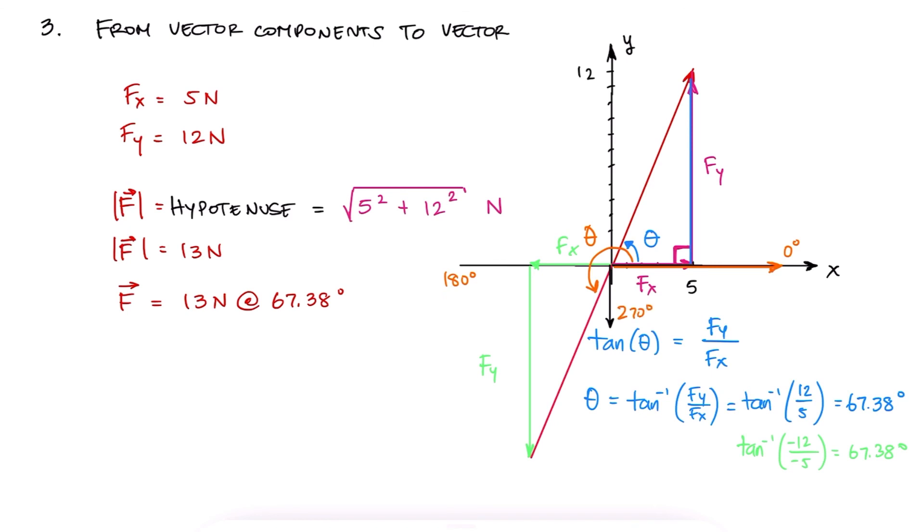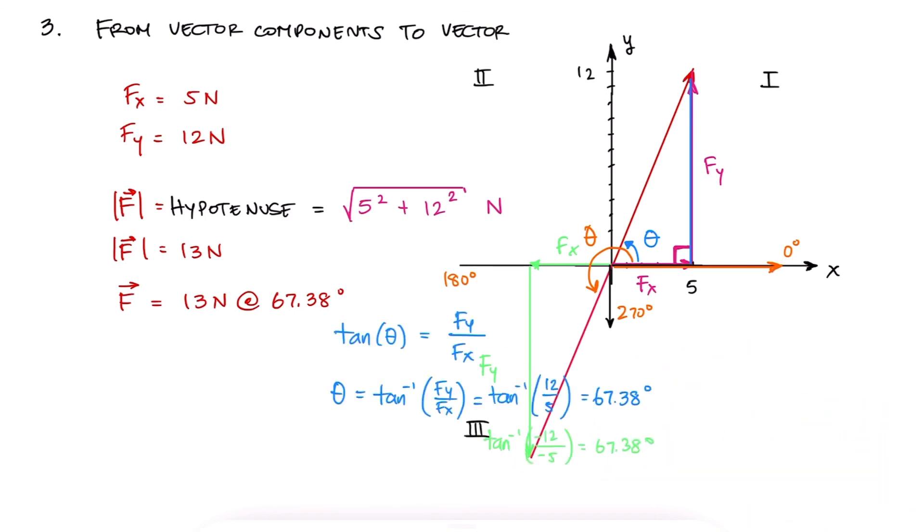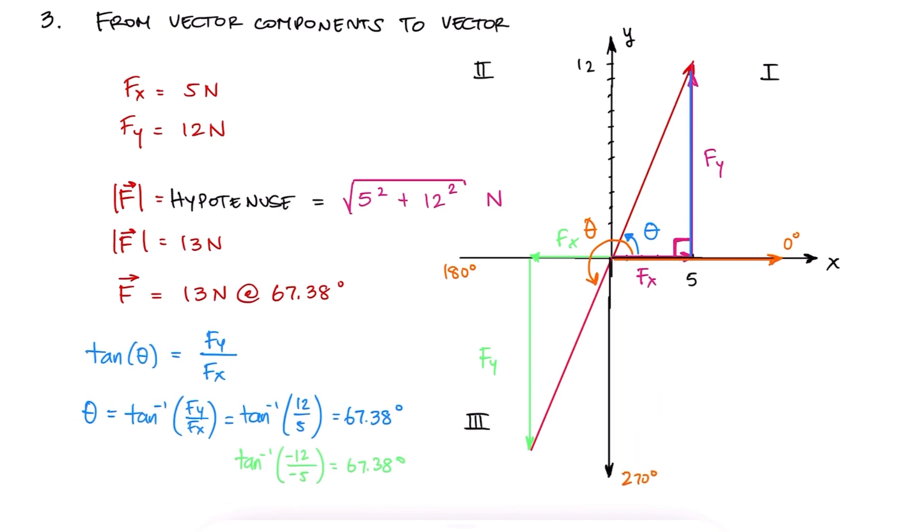You can check out a trig-related video link in the description below if you want to brush up on this, but for static scores purposes, just remember that you need to identify the quadrant in which the resulting vector is pointing towards. If you'd like to watch some 2 minute example videos pertaining what we just went over regarding the components of 2D force vectors, make sure to check out the links in the description below.